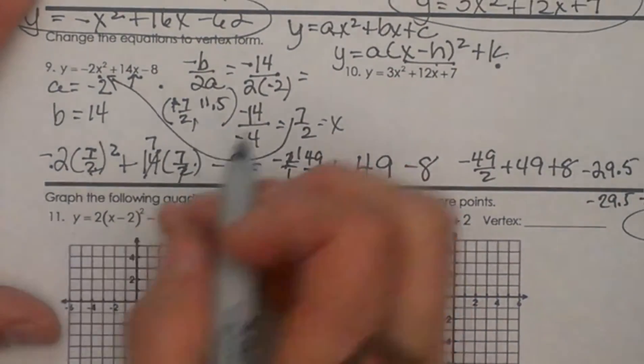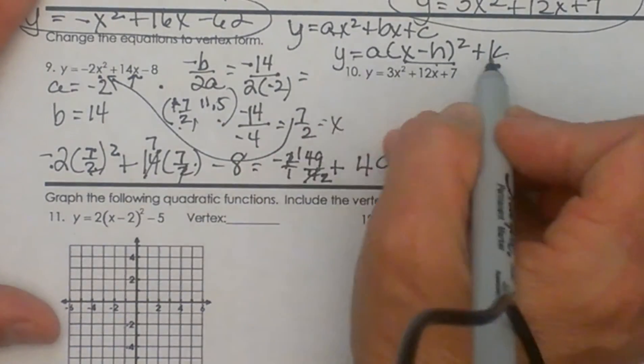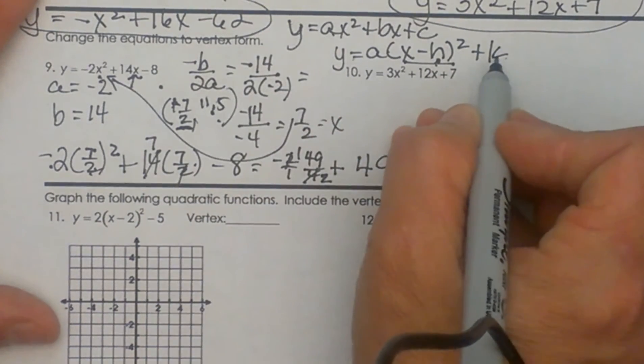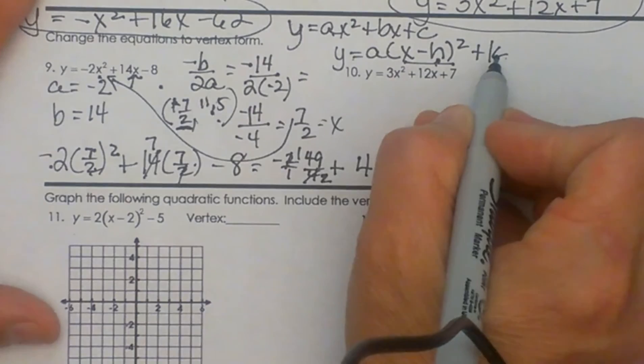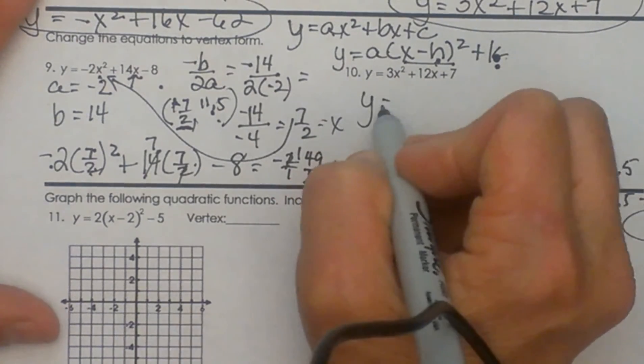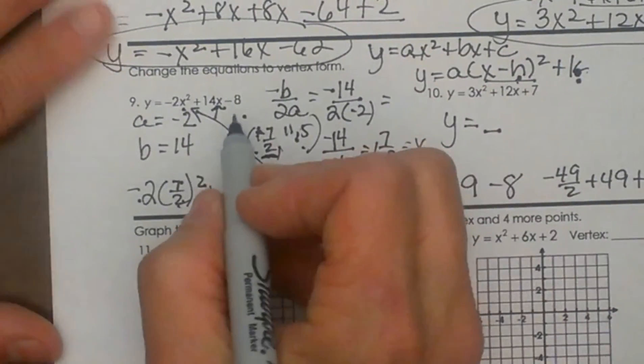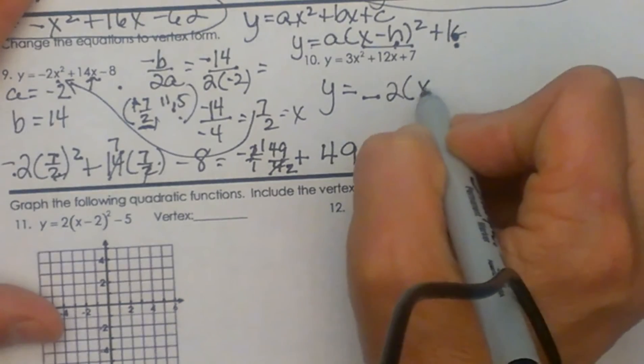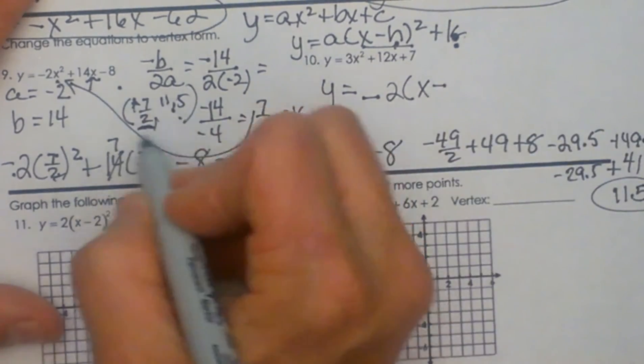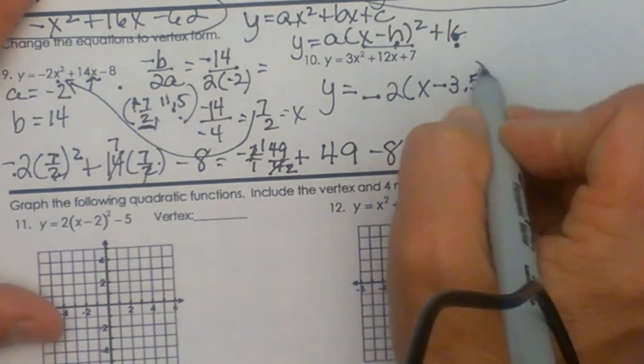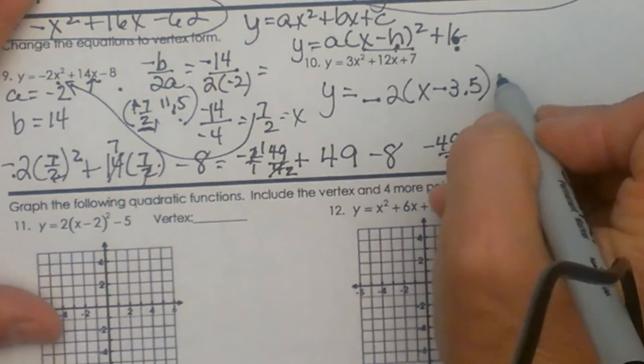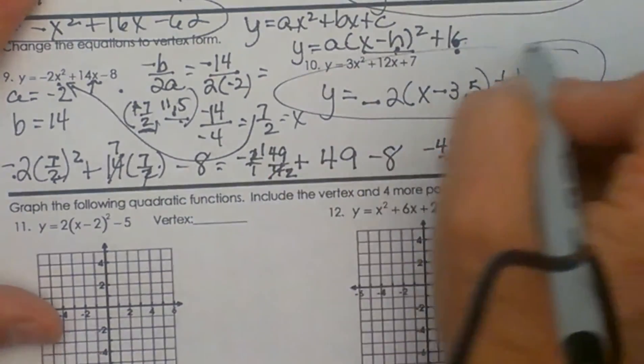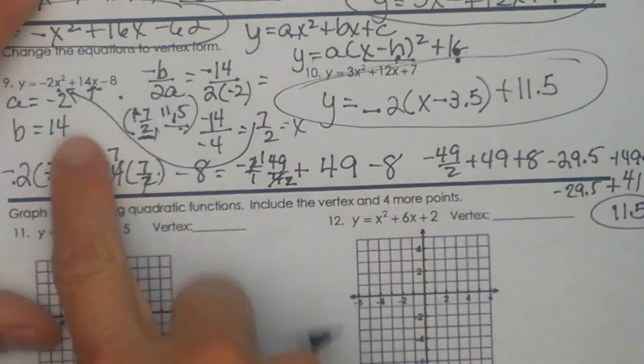I am going to take those two and plug them into the vertex form where h is my x coordinate, k is my y coordinate to get my vertex form. So y equals a, what was our a? Our a is negative 2, so let's plug in negative 2 times x minus h, well that is 7 halves or 3.5, I will write it as a decimal for now, plus k, well k is my y coordinate plus 11.5. And that is how you convert from standard to vertex.